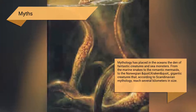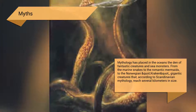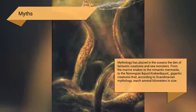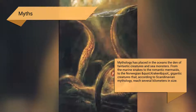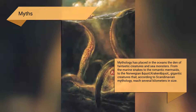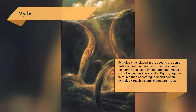Mythology has placed in the oceans the lair of fantastic creatures and sea monsters, from marine snakes to the romantic mermaids, to the Norwegian Kraken, gigantic creatures that according to Scandinavian mythology reach several kilometers in size.